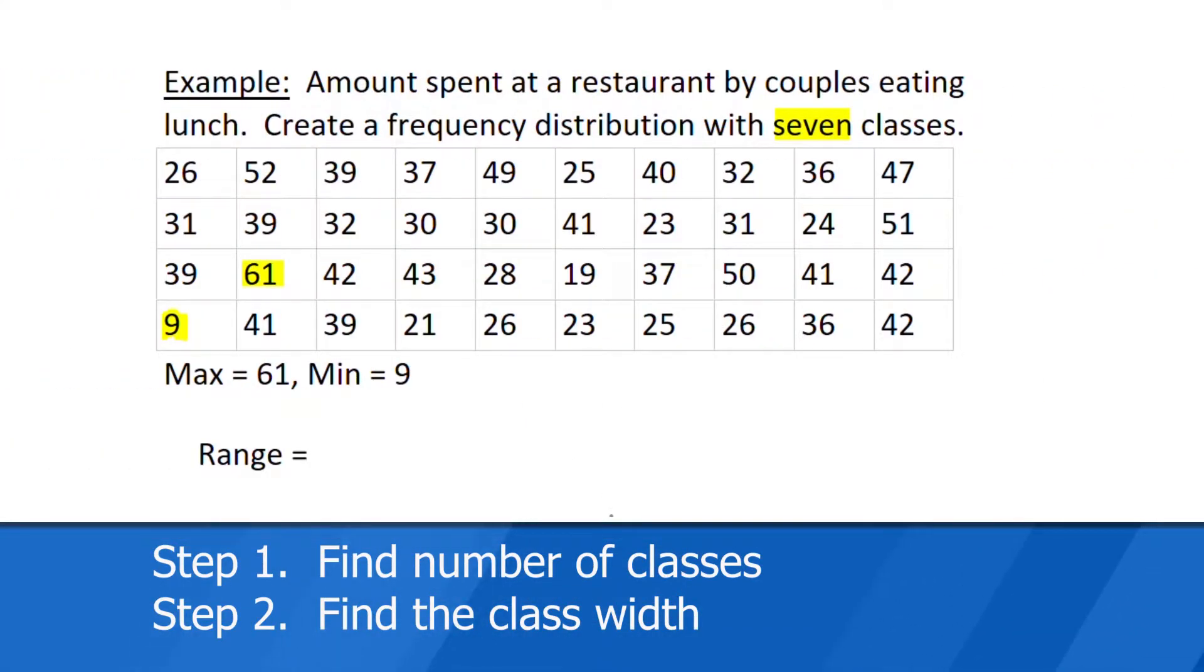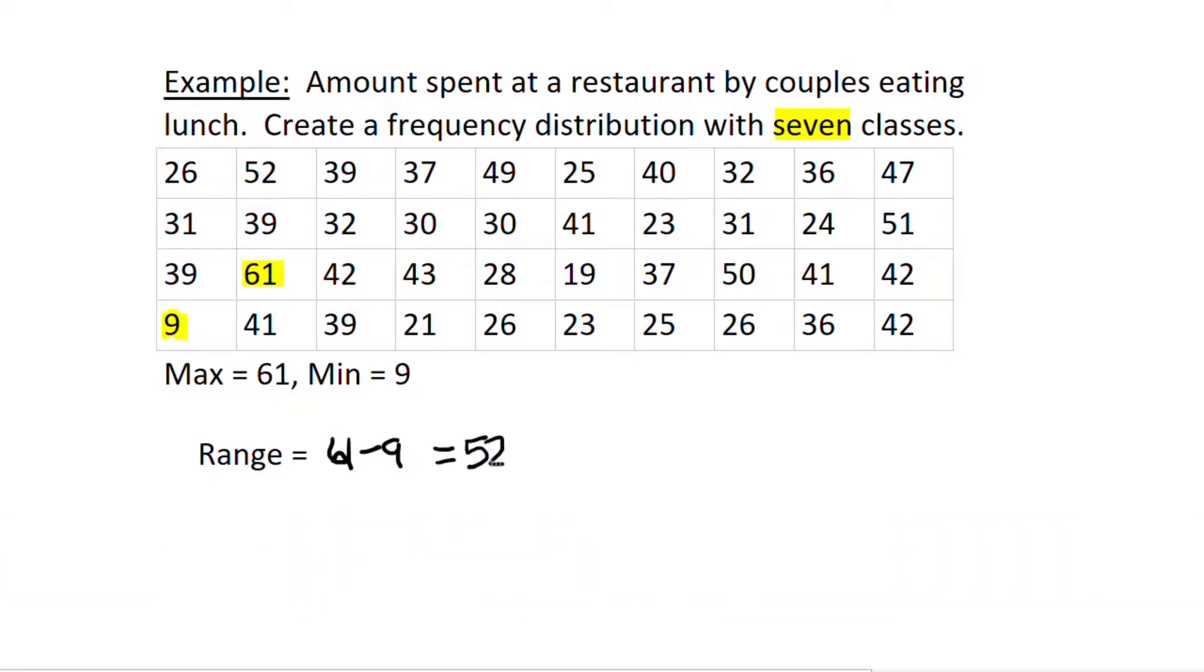So we want to find the range. And that's the max value minus the min value. That's 52. Then in order to find the class width, what we're going to have to do is divide the range, 52, by the number of classes, which is seven. And then round up to the nearest convenient number. And this is about 7.43, which I'm going to round up to eight. So our class width is eight.